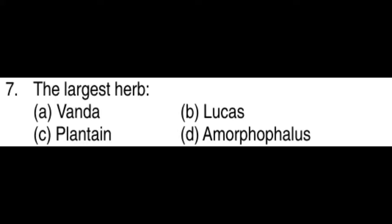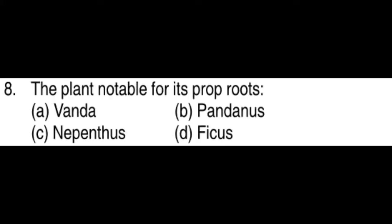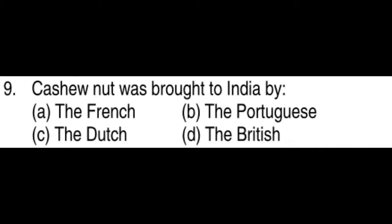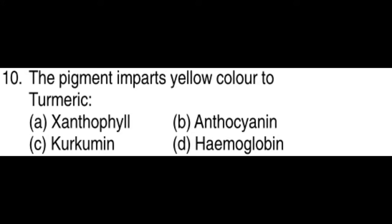The largest herb is plantain. The plant notable for its prop roots is Ficus. Cashew nut was brought to India by the Portuguese. The pigment that imparts yellow color to turmeric is curcumin.